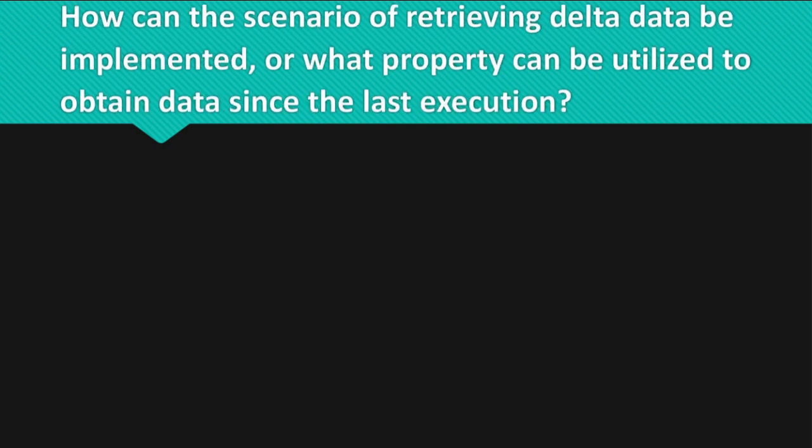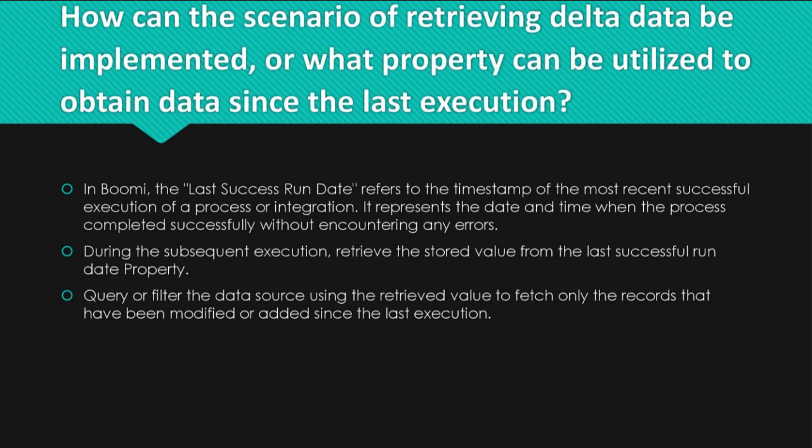Question: How can the scenario of retrieving delta data be implemented, or what property can be utilized to obtain data since the last execution? Answer: In Bumi, the last success run date refers to the timestamp of the most recent successful execution of a process or integration. It represents the date and time when the process completed successfully without encountering any errors. During the subsequent execution, retrieve the stored value from the last successful run date property, then query or filter the data source using the retrieved value to fetch only the records that have been modified or added since the last execution.